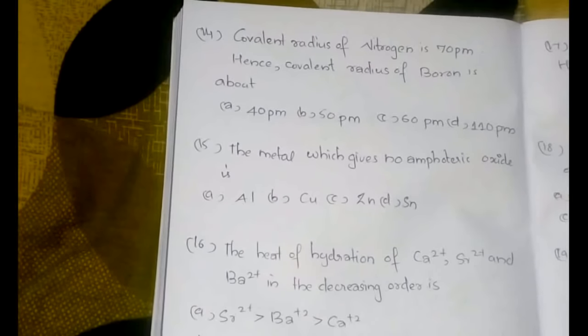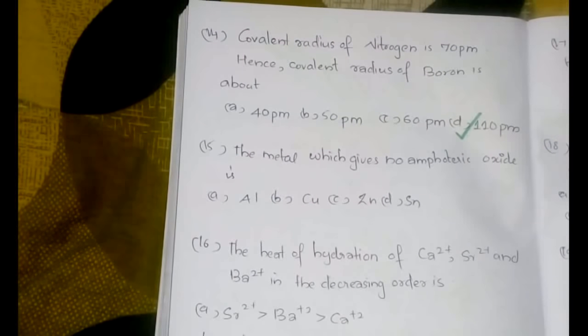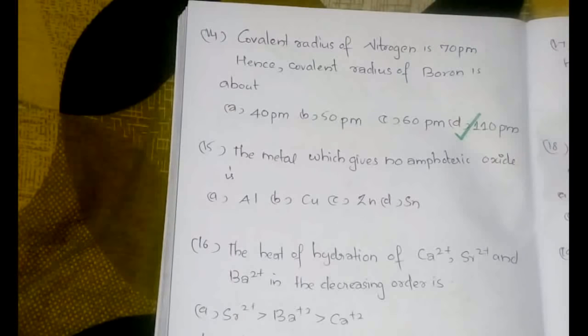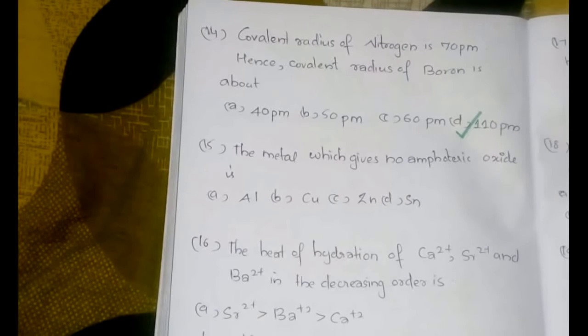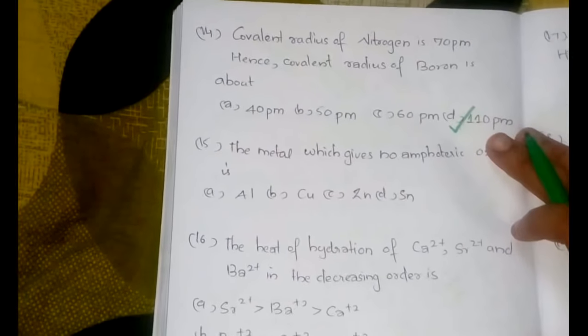The fourteenth question: the covalent radius of nitrogen is 70 pm, hence the covalent radius of boron is about? The answer is option D, 110 pm. Since the covalent radius decreases from left to right across the period, boron, being to the left of nitrogen, should have a covalent radius greater than 70 pm. Among the options, only 110 pm is greater than 70, so that is the answer.